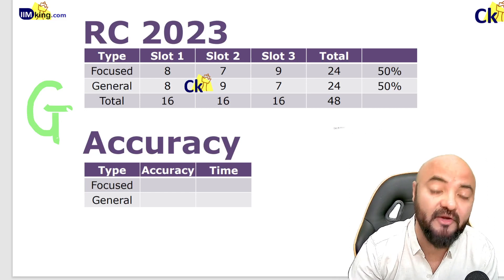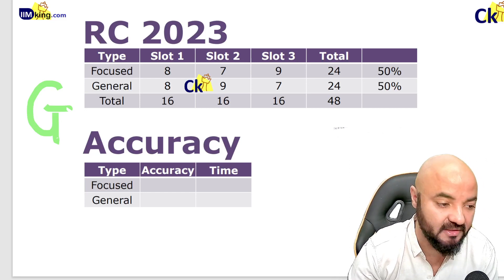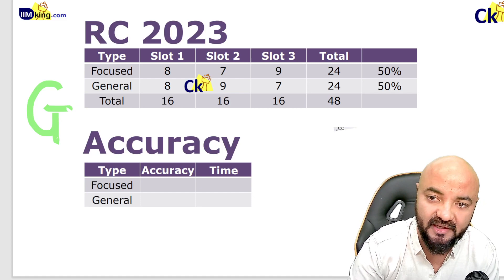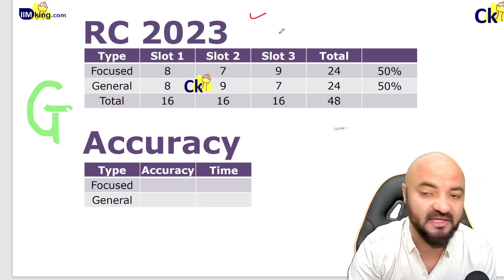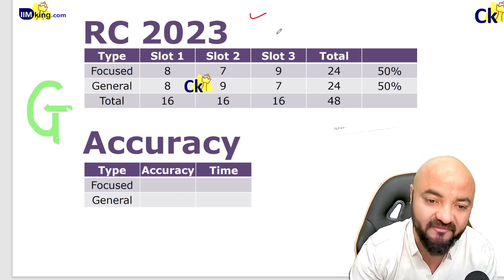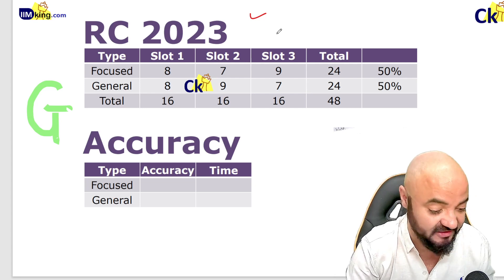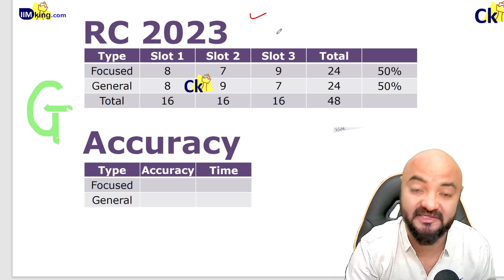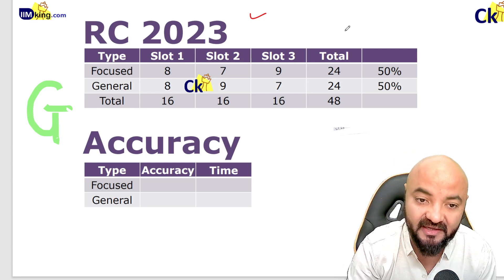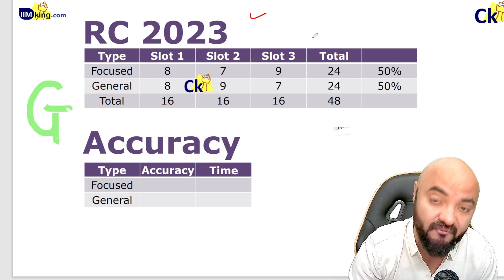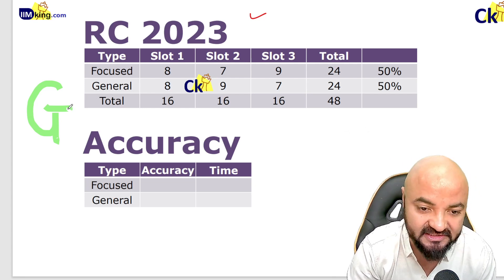There are two kinds of questions coming in RC: history-based RC and science-based RC. Let's look at the types of questions coming in RC - this is a beautiful strategy.